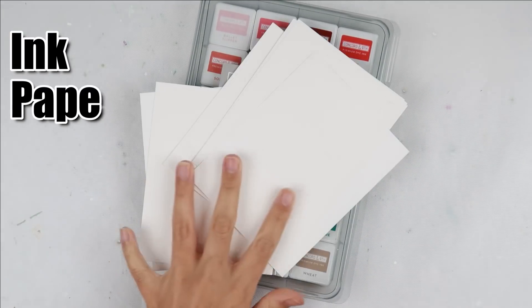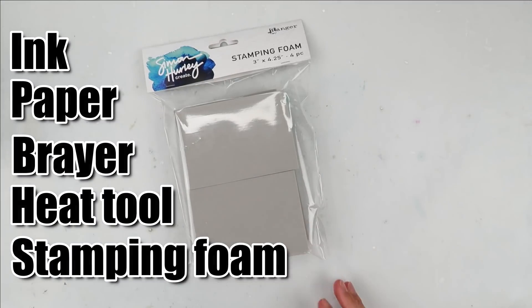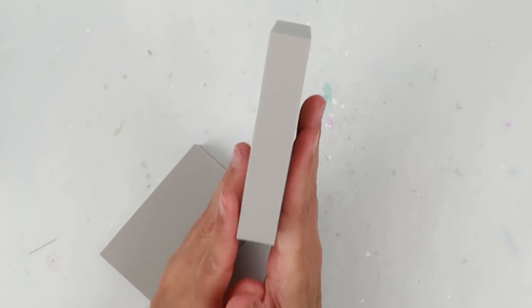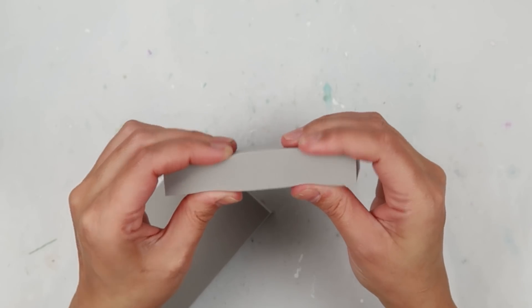I'm going to need some ink, some paper, a brayer, and a heat tool in addition to the stamping foam. The stamping foam measures three by four and a quarter and it is about three and a quarter inches thick. There is four in a pack.